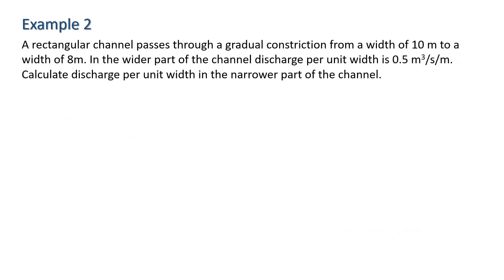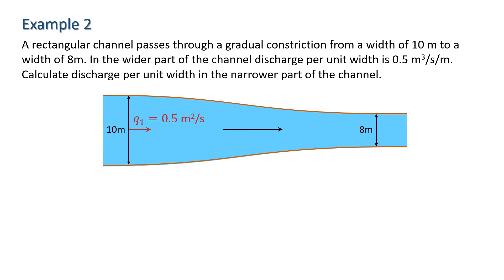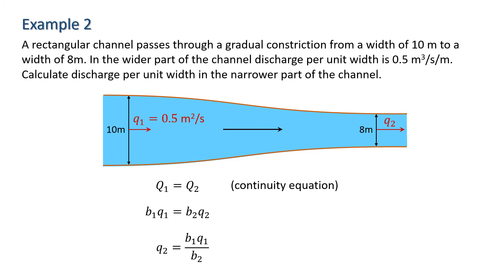In this second example, we're looking at a gradual constriction in a rectangular channel, and we know the channel widths and the incoming discharge per unit width. The diagram is giving us a view of the channel from above. From conservation of mass, Q1 equals Q2, which we can rewrite in terms of discharge per unit width as B1 times q1 equals B2 times q2. Rearranging for q2 gives us a discharge per unit width of 0.625 meters cubed per second per meter.